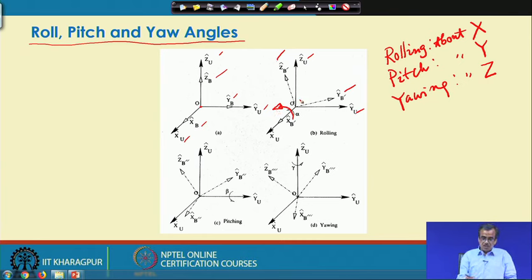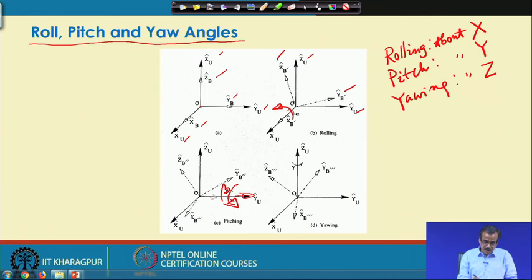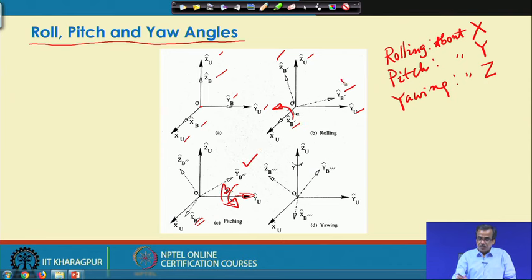Now I am going to take the rotation about yu — this is the yu direction — by an angle beta in the anticlockwise sense. If I take the rotation about yu by an angle beta, what will happen to xb double prime? xb double prime will be different from xb prime, yb double prime will be different from yb prime, and zb double prime will be different from zb prime.